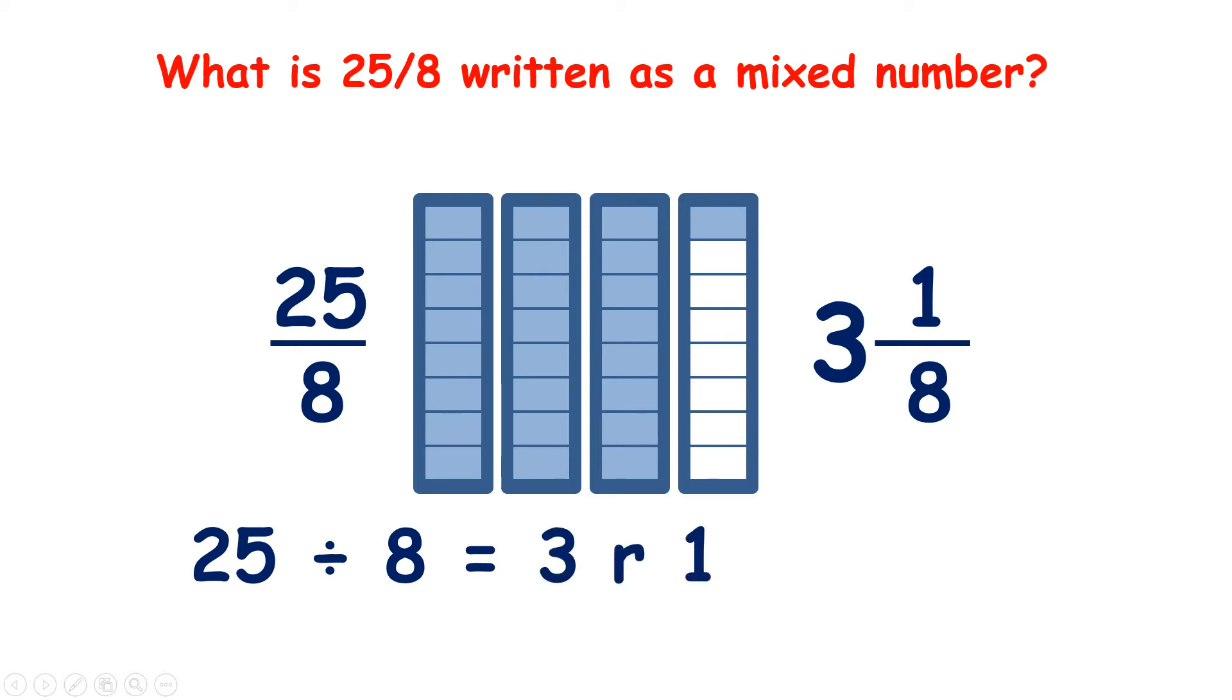So when we do 25 divided by 8, we get 3 remainder 1. And you'll notice that the whole number we get is the whole number in our mixed number, and then the remainder that we get is the numerator in our mixed number, and the denominator stays the same.